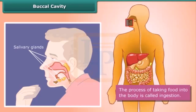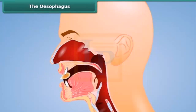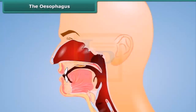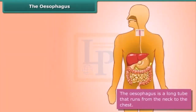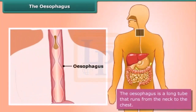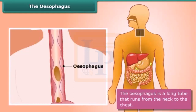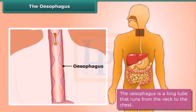This process of taking food into the body is called ingestion. When the food we eat becomes a soft mass, our tongue pushes it to the food pipe, or esophagus. The esophagus is a long tube that runs from the neck to the chest, and the movements of its walls force the food to the stomach.